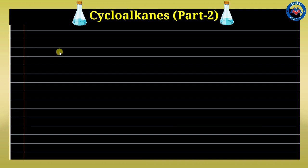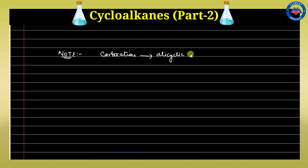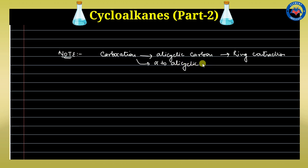First, we will discuss ring expansion. When we react with nitrous acid and a carbocation forms, if the carbocation is on an alpha carbon that is alicyclic, then ring expansion will occur. If the carbocation is directly on the alicyclic carbon, then ring contraction will occur.